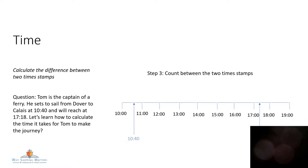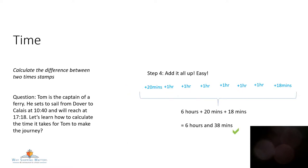Now we're going to count the time between the two timestamps. This is how we'll do it. First, 20 minutes from 10:40 to 11. Then one hour till noon, another hour till 13:00, another hour till 14:00, till 15:00, till 16:00, till 17:00, and then 18 minutes. Now let's add up all the time on our timeline. There were six hours and 20 minutes plus 18 minutes — so six hours and 38 minutes.